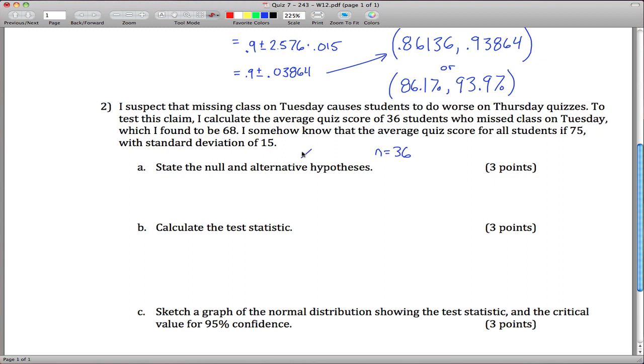I find this to be x-bar is 68. I somehow know that the average quiz score for all students is 75, so I'll denote that mu sub 0 is 75, and standard deviation is 15.